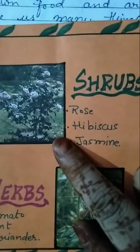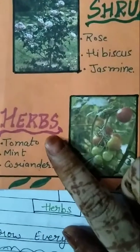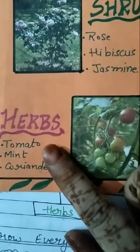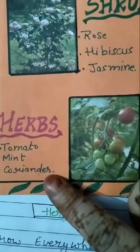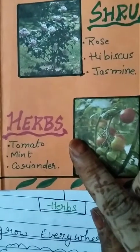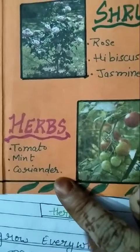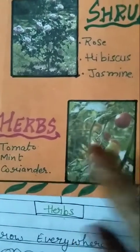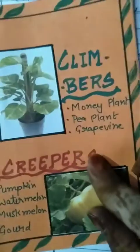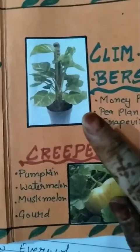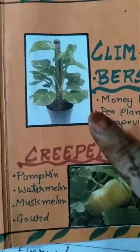Shrubs can live for a few years, but herbs can live for only one season. Tomato and coriander are examples of herbs. The stems of herbs are soft. We can eat the stem too — mint and coriander stems are also eaten.